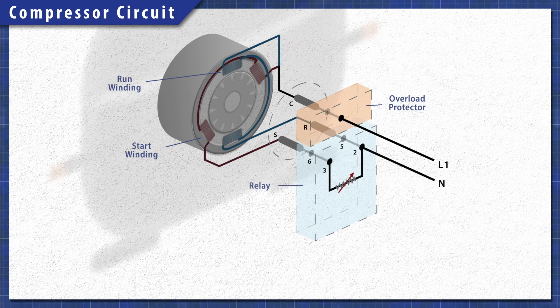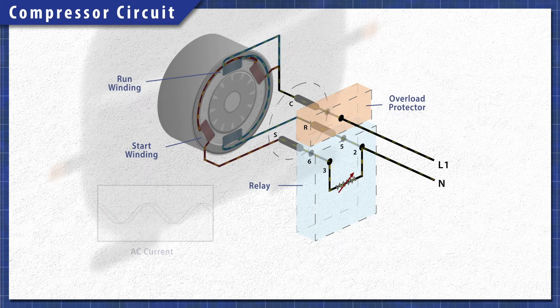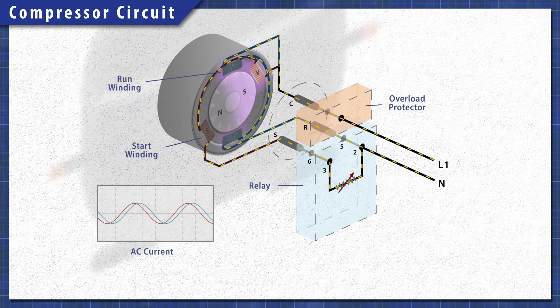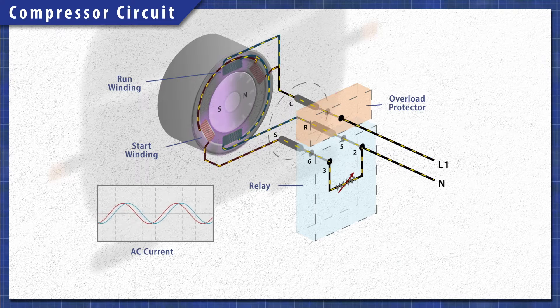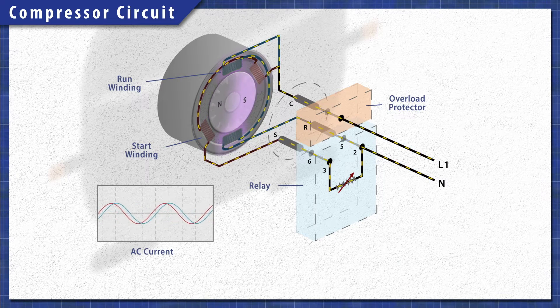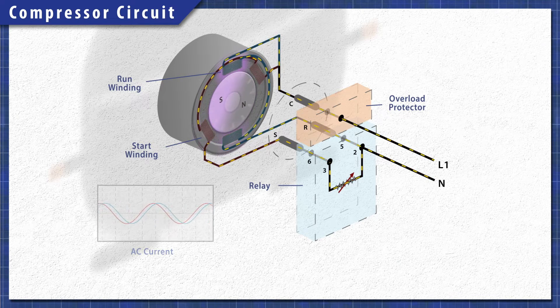Single phase motors use resistance or a capacitor to create a phase shift in the start winding. This rotating magnetic field creates the torque needed to start the motor.